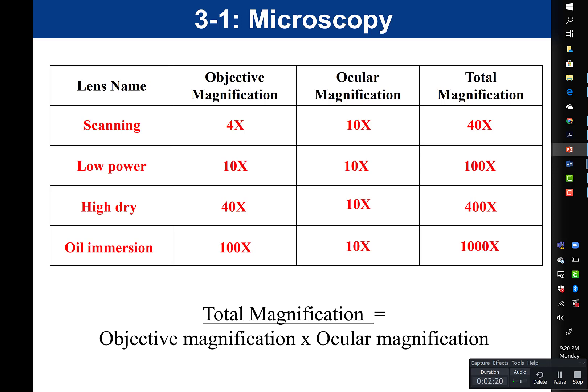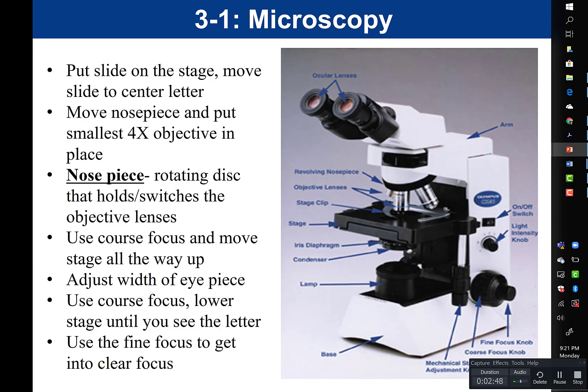You should also be able to calculate total magnification: take your objective magnification times your ocular to get your total magnification. You should also know the names of the four lenses: the 4x lens is the scanning lens, the 10x is the low power, the 40x is the high dry, and the 100x is the oil immersion lens.